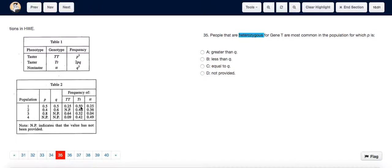In population 1, P is equal to Q. So people who are heterozygous for gene T are most common in the population for which P equals Q. The answer is C.